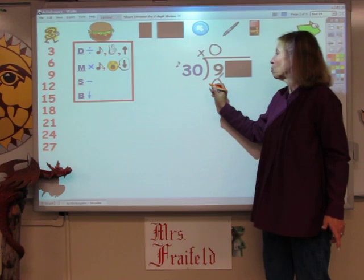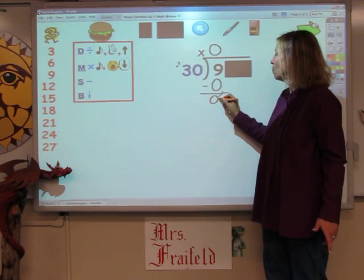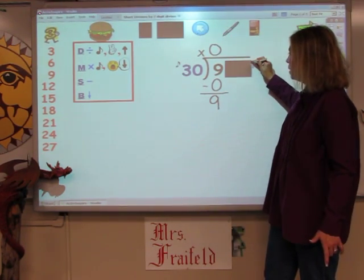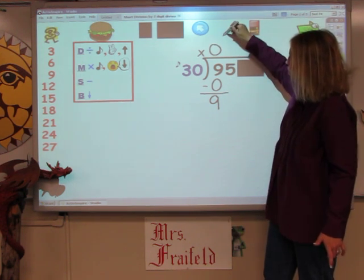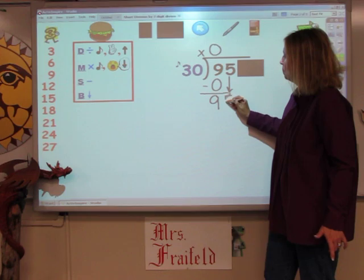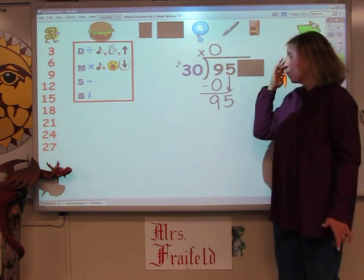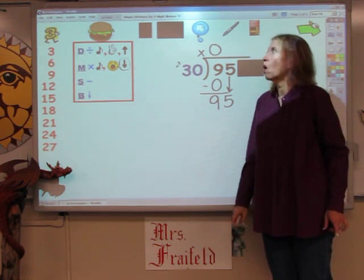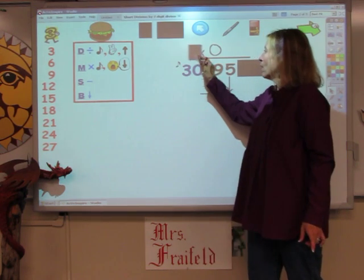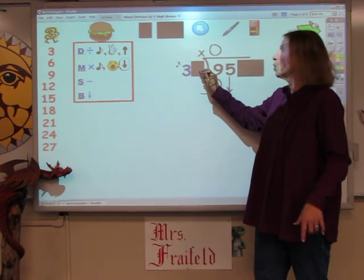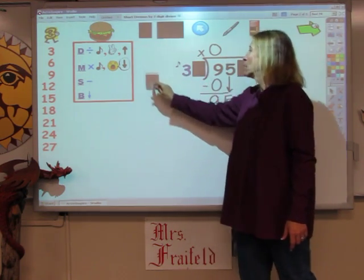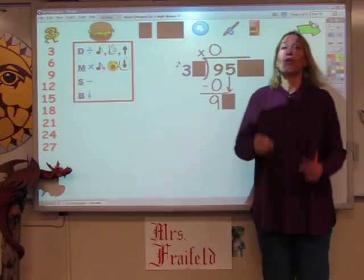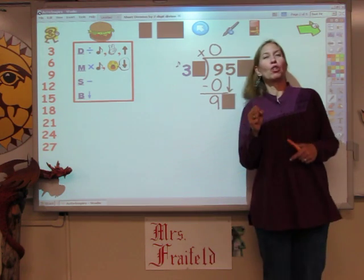The next step is to subtract. I have 9 left over, and my next step is to bring down. I'm not going to look at all these numbers — just the one I need. I bring him down. Now, nobody knows their 30 times tables, but you do know your 3 song. So cover everything up but the 3 — cover one digit on the divisor, cover one digit on the number below. Now it's easy. Sing the 3 song until you either hit 9 or go over it, and the number of fingers is what you write at the top.